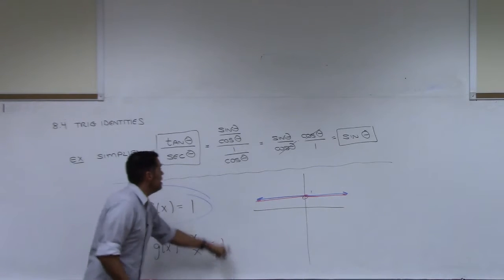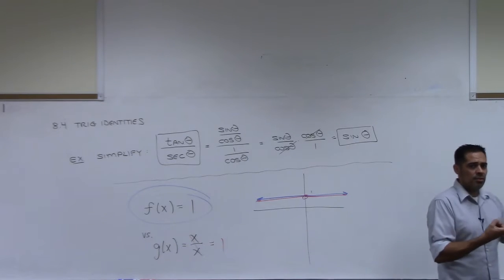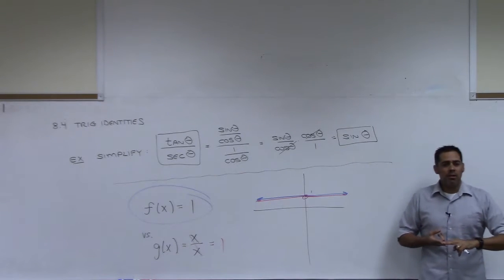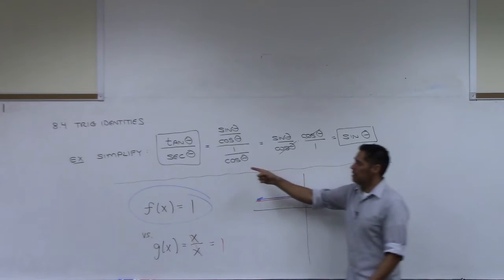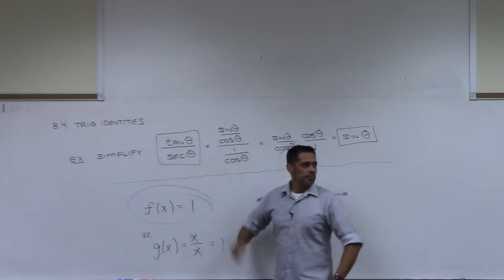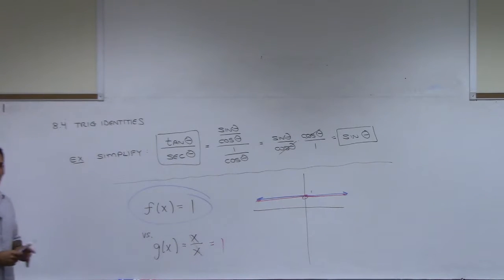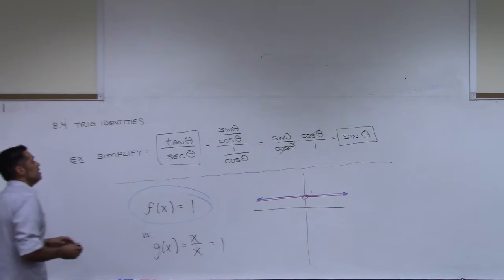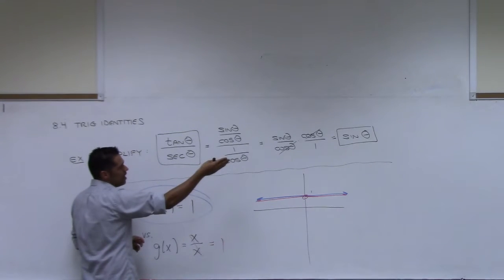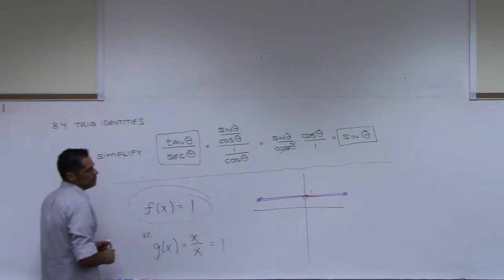So we're saying here that this trig expression is equivalent to this other one, so long as theta is not pi over 2, 3 pi over 2 — actually there's a lot of them; there's an infinite number of places where you can make cosine 0. You have an N in there. The book doesn't talk about it too much, and I know it isn't stressed in college algebra, but I just don't want you thinking this is exactly sine. It's not exactly sine.